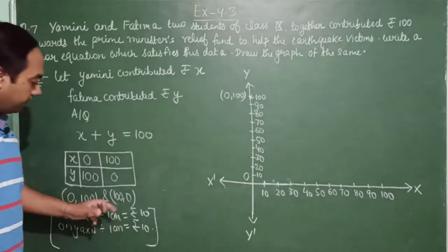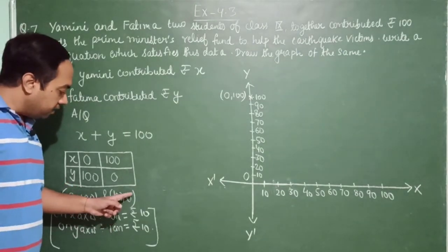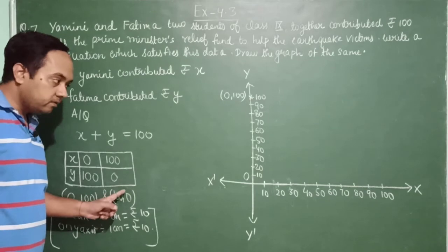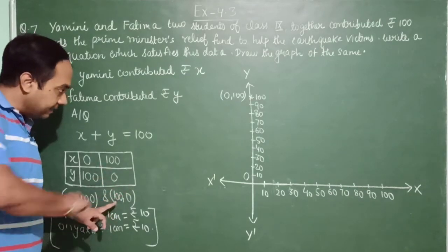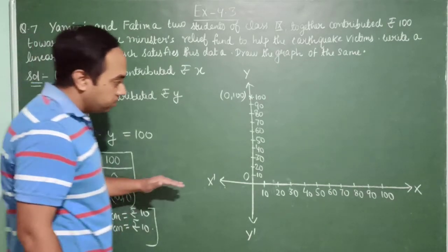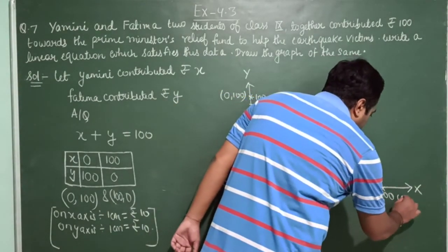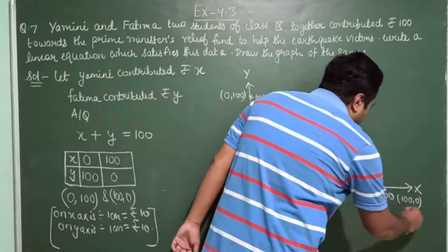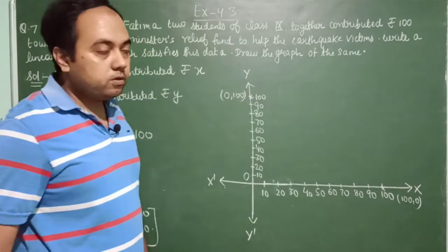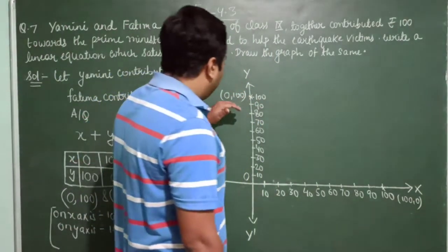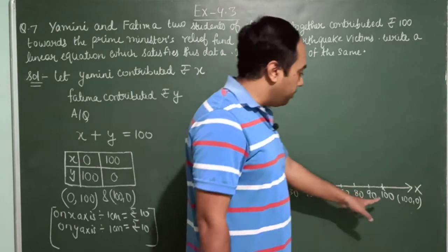Now the next one is (100,0). In this (100,0), y-coordinate is 0, so on the x-axis we can find 100. So on this x-axis, this is 100 over here. So this will represent (100,0). So right now we have plotted (0,100) and (100,0) on the graph.